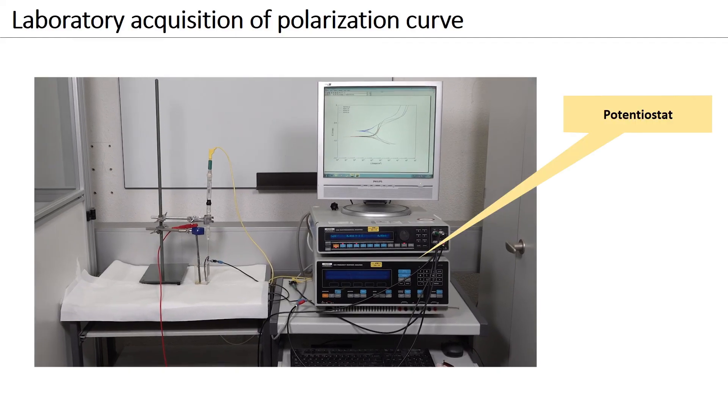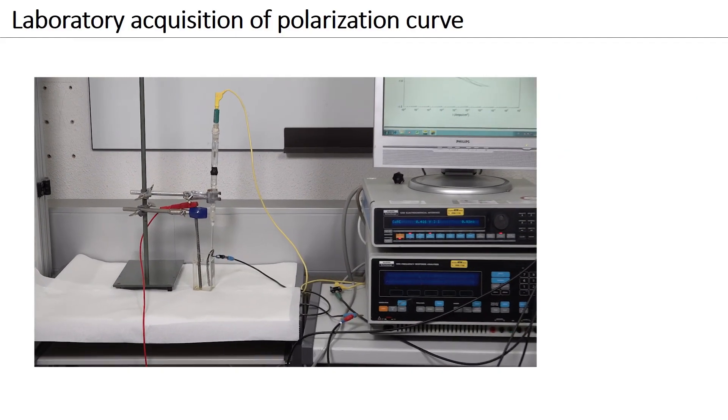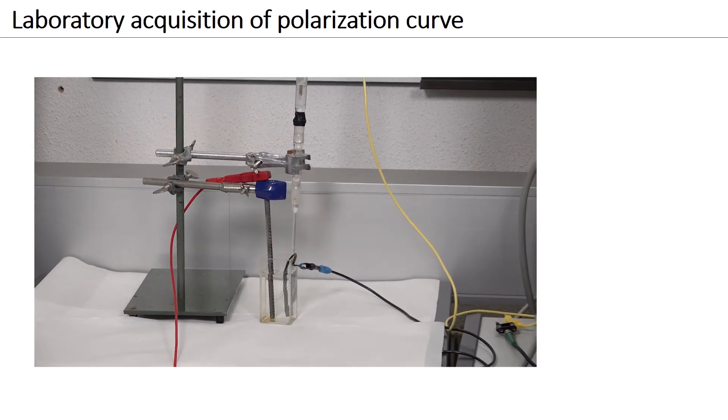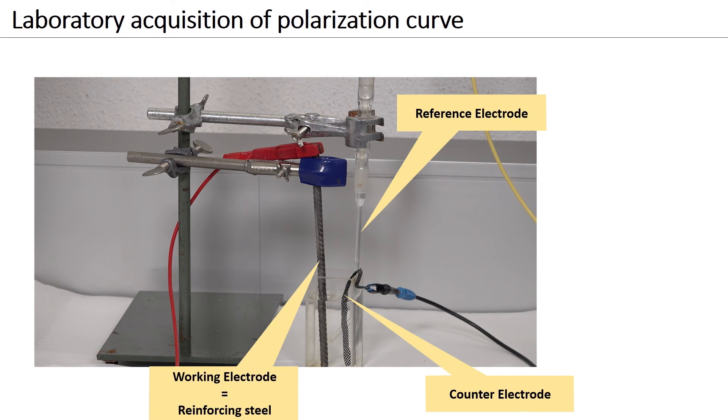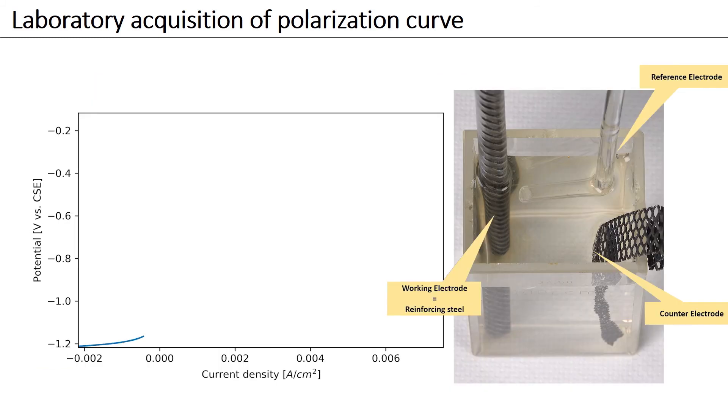It is possible to measure polarization curves under controlled conditions in the laboratory. With the help of a potentiostat, a reference electrode and a counter electrode, the potential of an electrode can be stepwise forced away from the equilibrium potential and the corresponding current can be recorded.